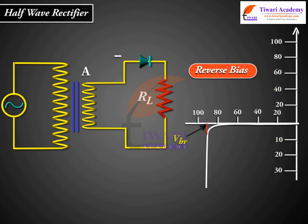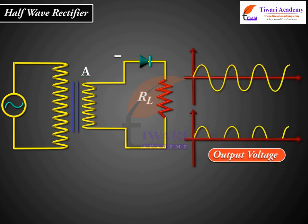Reverse breakdown voltage must be sufficiently higher than the peak AC voltage at the secondary of the transformer. The output voltage is restricted to only one direction and is said to be rectified.